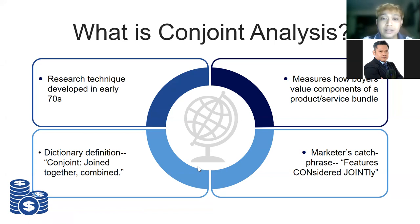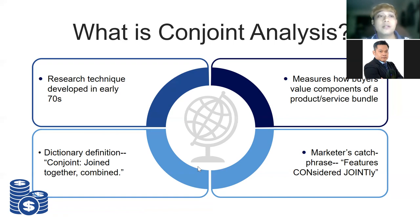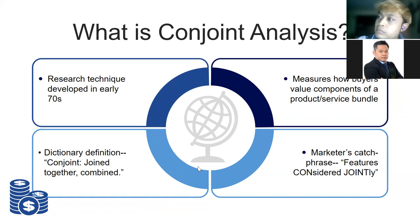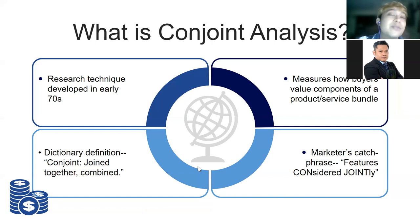The student shared that he read about very basic concepts and found some similarities with AHP — the analytical hierarchy process. The process seems a little bit similar to AHP. The instructor asked other students if anyone had heard of conjoint analysis or learned it before. No one else knew about it.